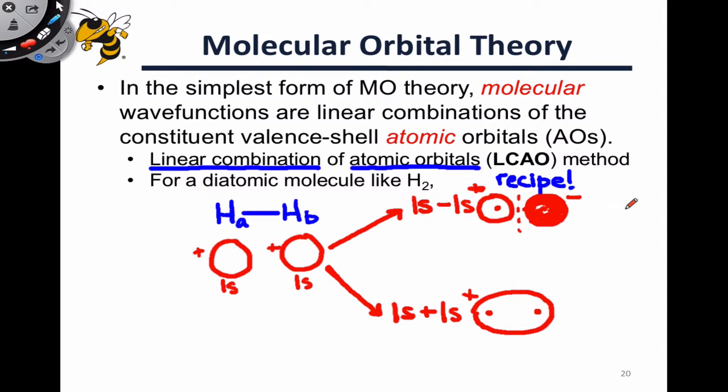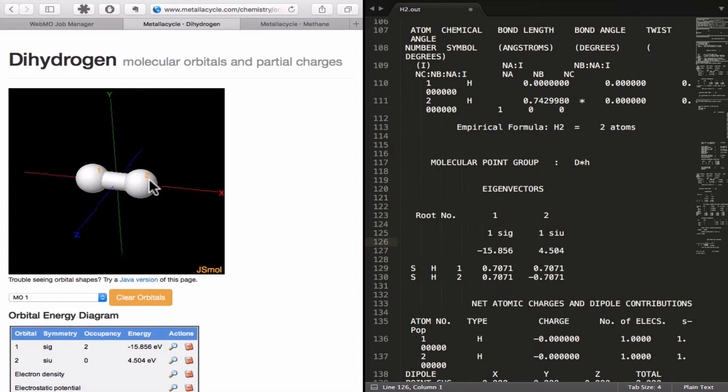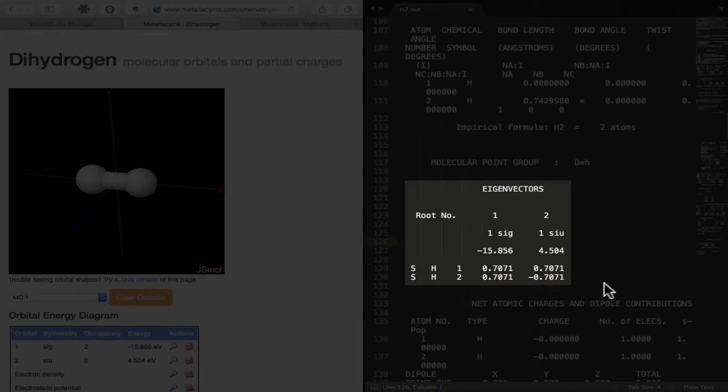Let's actually see what this looks like in the results of a WebMO calculation. Here's an image of dihydrogen on the left and on the right, I have the WebMO output, and we're going to focus especially on this eigenvectors table within the output.